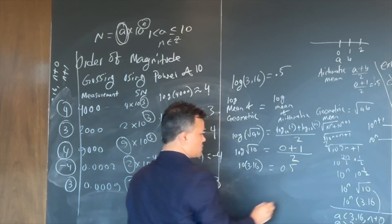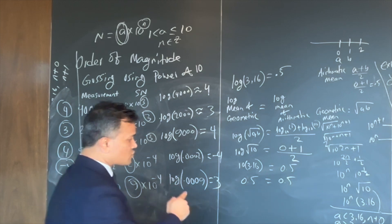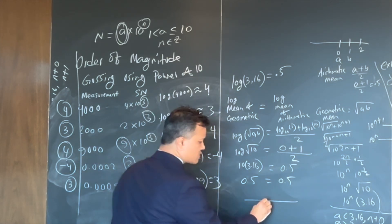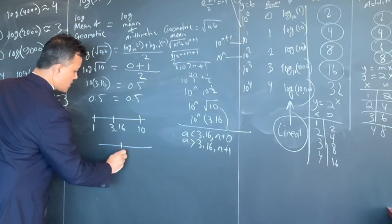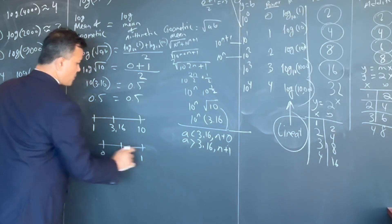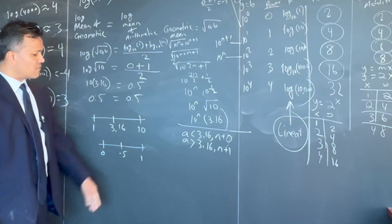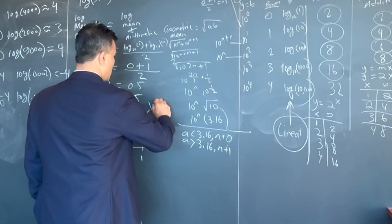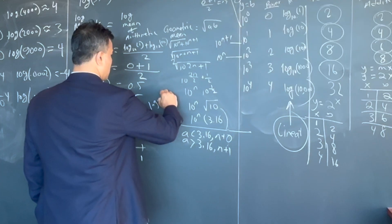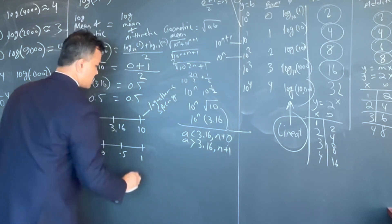On a linear number line, 3.16 sits between 1 and 10, and 0.5 sits exactly in the middle of 0 and 1. So 3.16 is the geometric midpoint of 1 and 10 on a logarithmic scale. Linear spacing is good for one type of problem and logarithmic spacing is good for a different type.